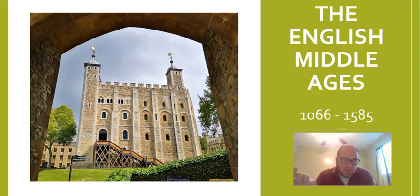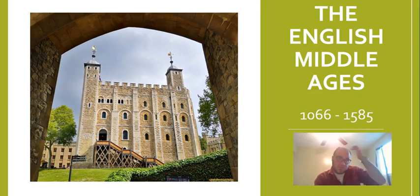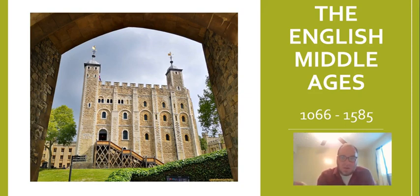If you recall, the Anglo-Saxon period went from about 450 AD until 1066 when it ended abruptly at the Battle of Hastings, with William the Conqueror cutting down King Harold of the Anglo-Saxons and starting a new age of British history. This age generally starts in 1066 with the conquest and goes until 1585, which is when the first Tudor king — I think it's Henry VII — becomes king of England.